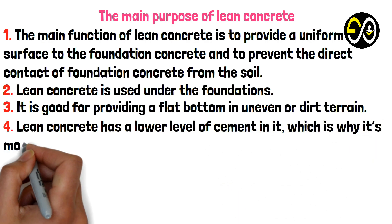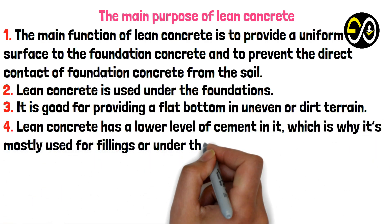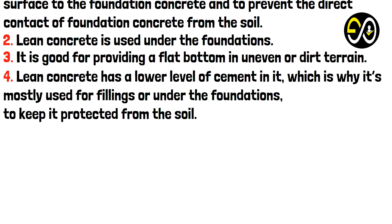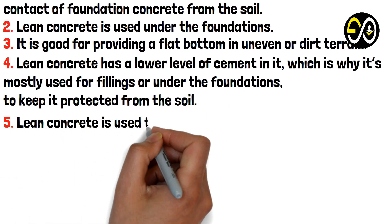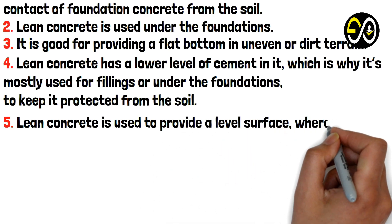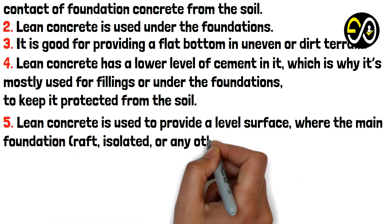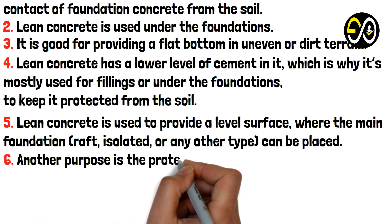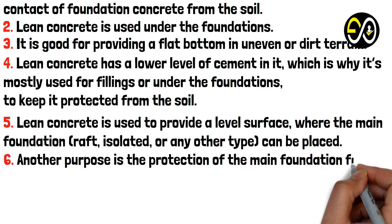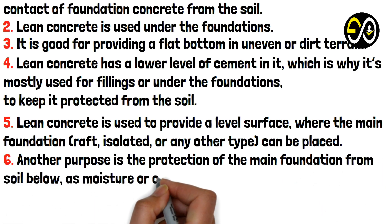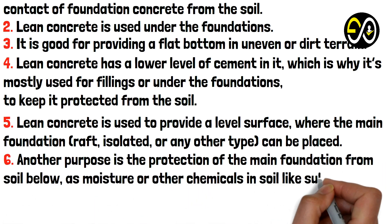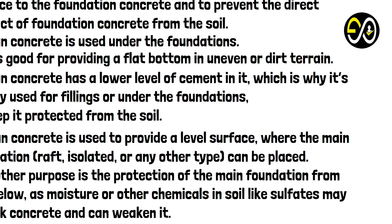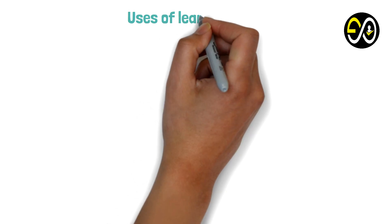4. Lean concrete has a lower level of cement, which is why it is mostly used for fillings or under foundations to keep them protected from the soil. 5. Lean concrete is used to provide a level surface where the main foundation — raft, isolated, or any other type — can be placed. 6. Another purpose is protection of the main foundation from soil below, as moisture or chemicals like sulfates may attack and weaken the concrete.